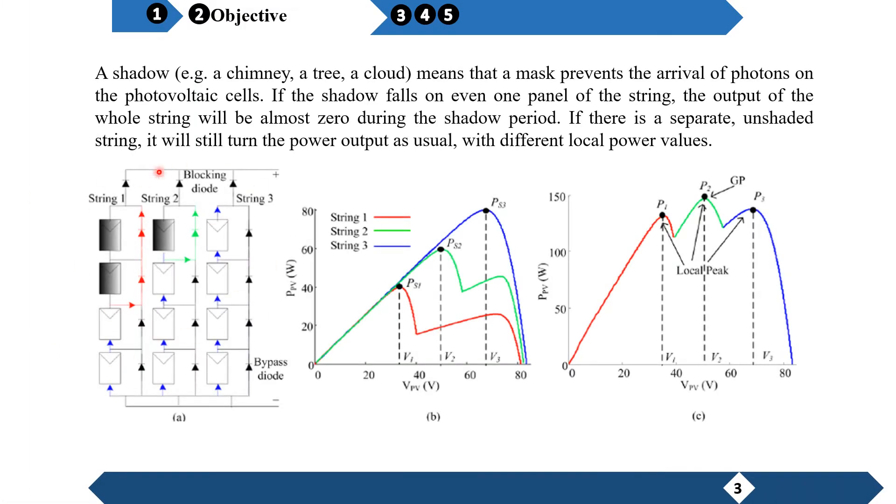A shadow means that a mask prevents the arrival of the photon of the photovoltaic cells. If the shadow fills one event of one panel of the stream, the output of the whole stream will be almost zero during the shadow period.